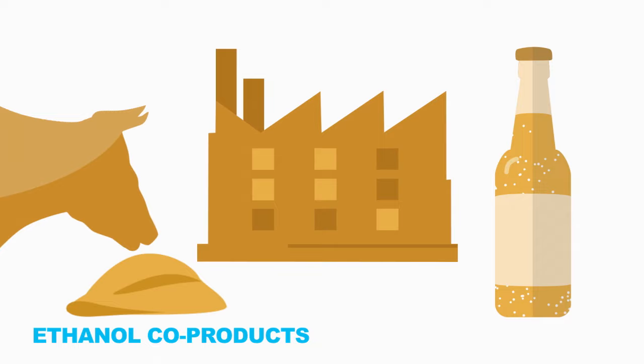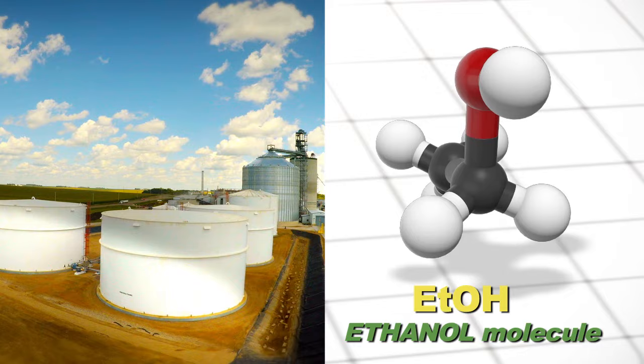There you have it. That's how corn becomes ethanol. And once ethanol is blended with gasoline, it becomes a high-performance fuel that's good for your car because it runs cleaner and cooler.